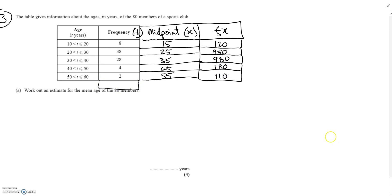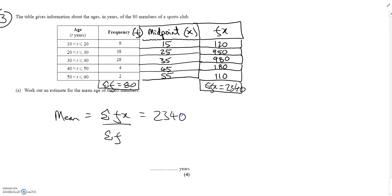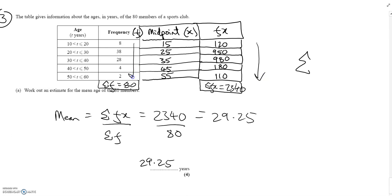The sum of f is 80 because there are 80 members in the club. Adding the fx values: 120 + 950 + 980 + 180 + 110 gives a sum of fx of 2340. The mean is the sum of fx over the sum of f, so 2340 divided by 80 equals 29.25. So the average age of the members is 29.25 years, which makes sense given the ranges. The sigma symbol just means 'sum' — that's how we calculate the mean from a frequency table.